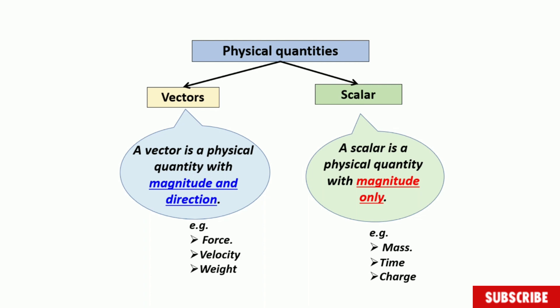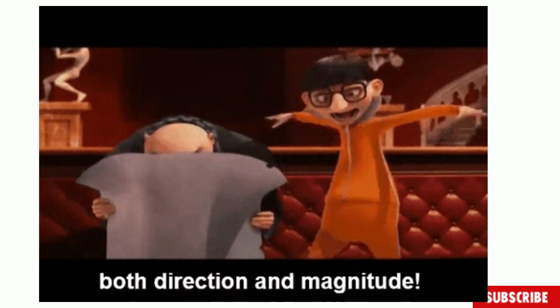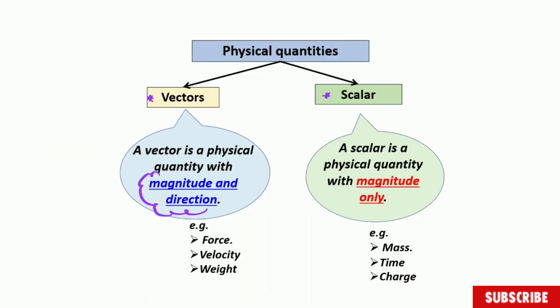All physical quantities can be divided into two groups: vectors and scalars. Vectors are those physical quantities that have magnitude and direction. Scalar quantities are those physical quantities that only have magnitude. In the case of vectors, having magnitude and direction means they are not well expressed if you don't mention the direction.